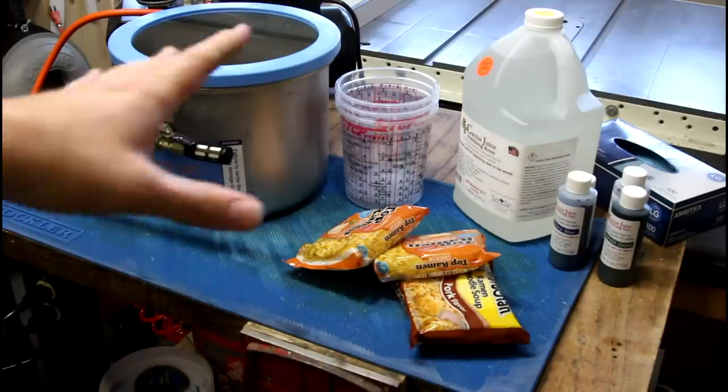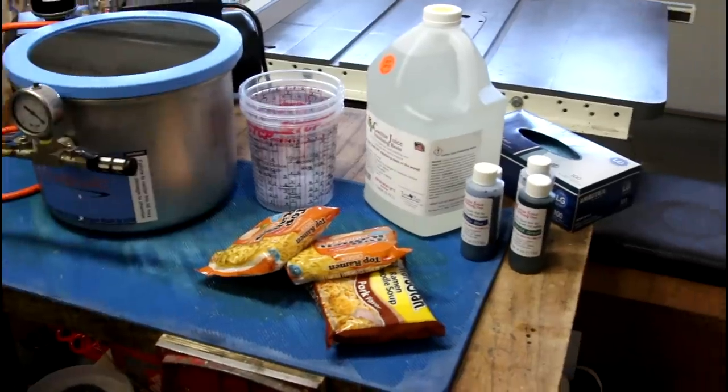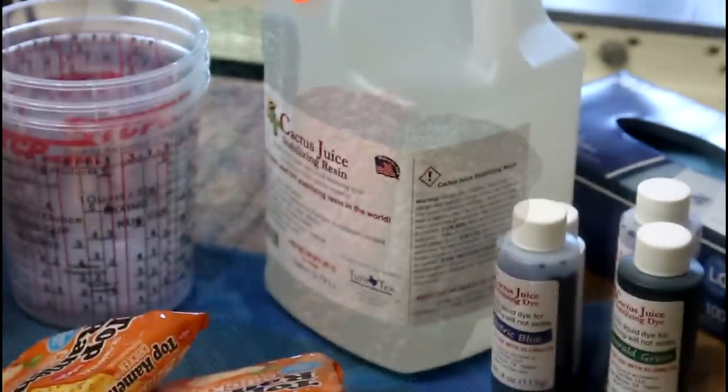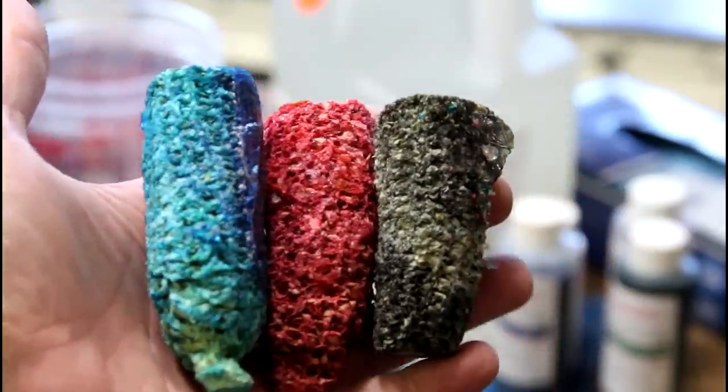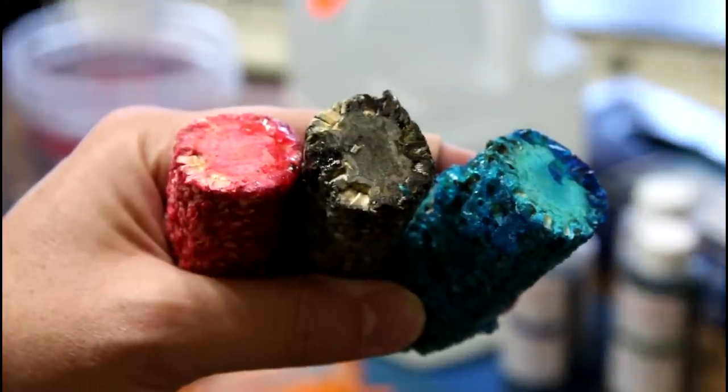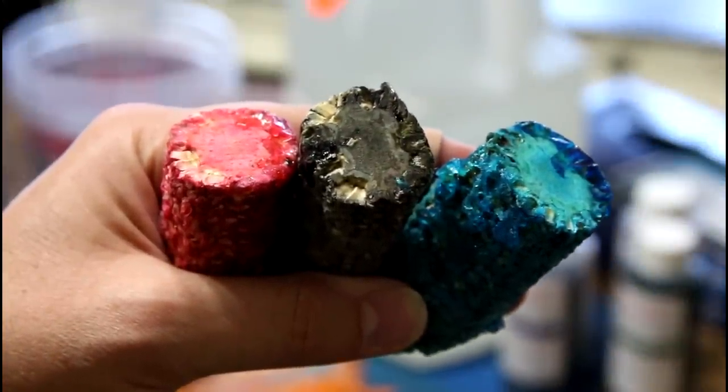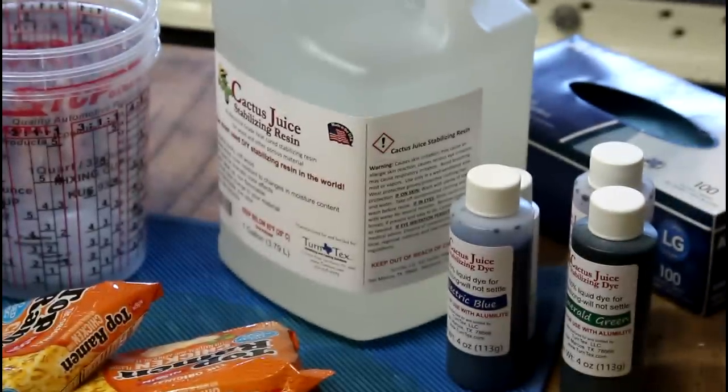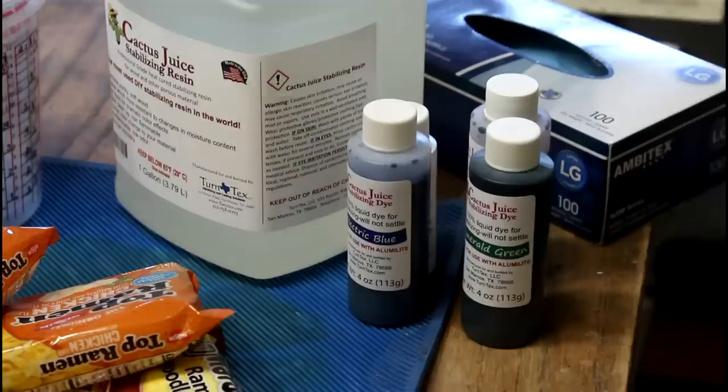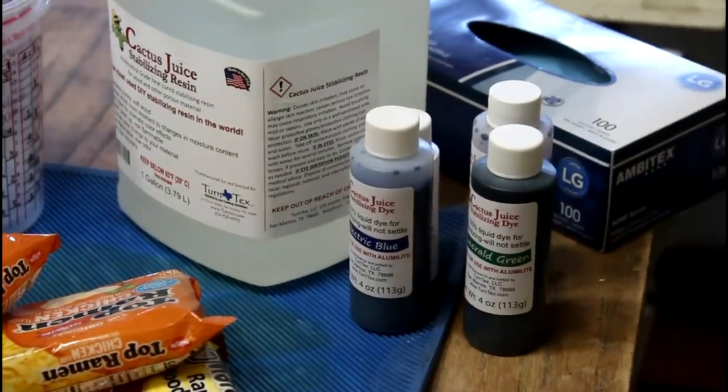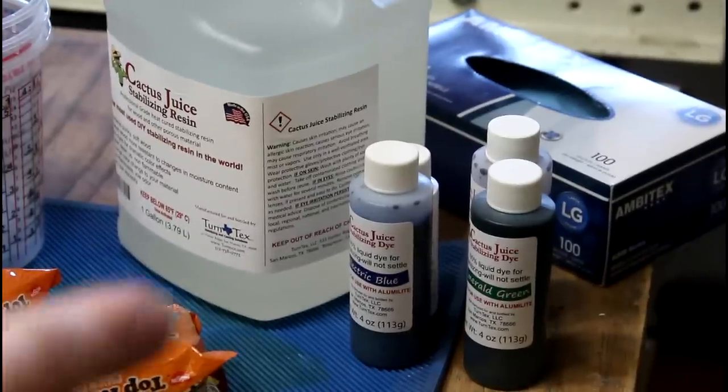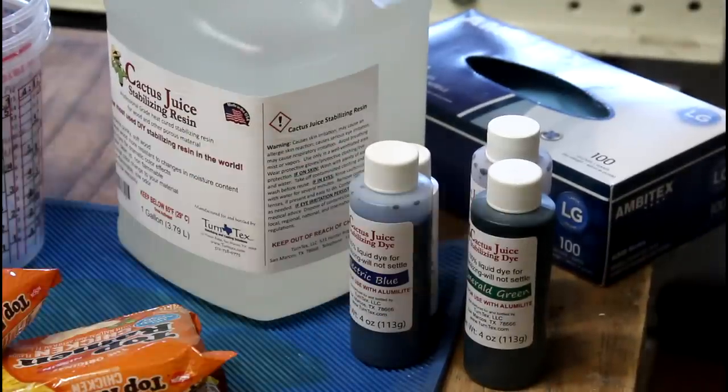I thought the best way to do that would be with stabilizing resin. The last time we dyed stuff with stabilizing resin it was these dried out corn cobs that I had, and that was just with a fabric dye. It was like a RIT kind of fabric dye. I don't know why I was surprised to find out that they make actual dye for stabilizing resin. So I bought some of that. I bought a new bottle of cactus juice stabilizing resin and I bought some stabilizing dyes.